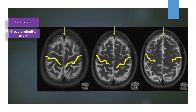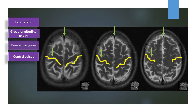The yellow lines indicate the central sulcus. The gyrus located in front of the central sulcus is the precentral gyrus, which is the primary motor cortex. The gyrus located behind the central sulcus is the postcentral gyrus, which is the primary sensory cortex.